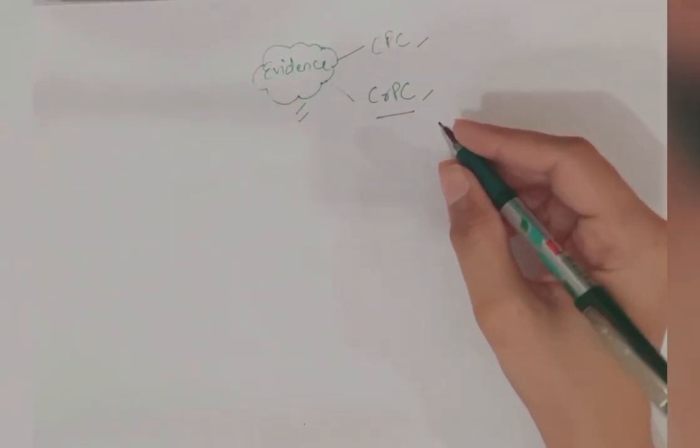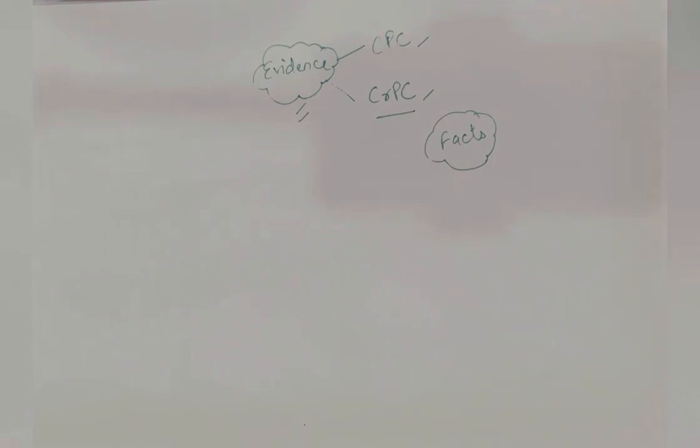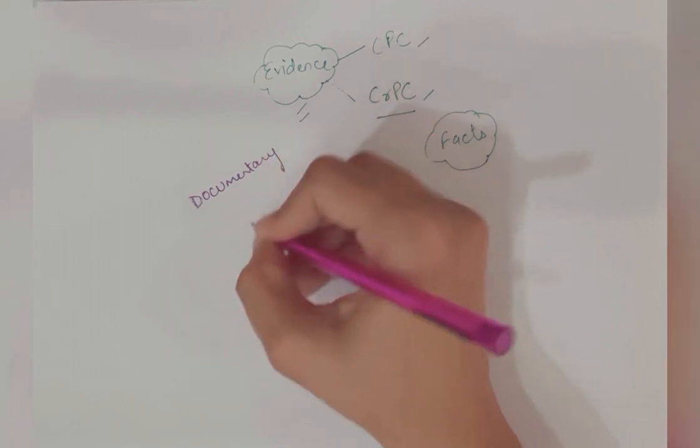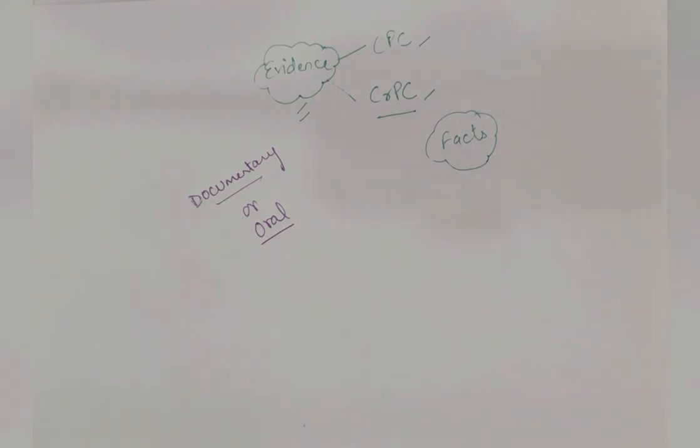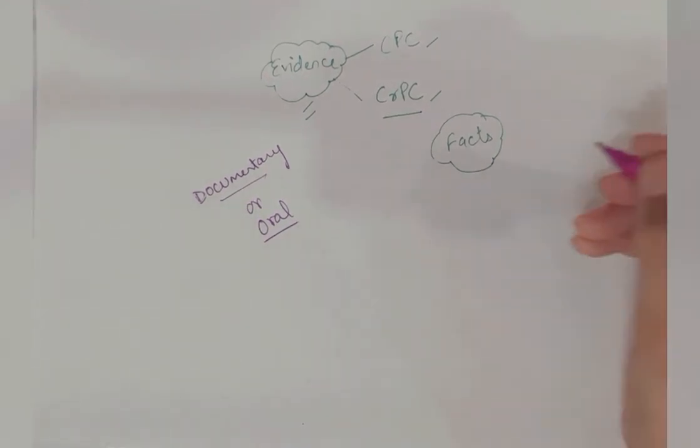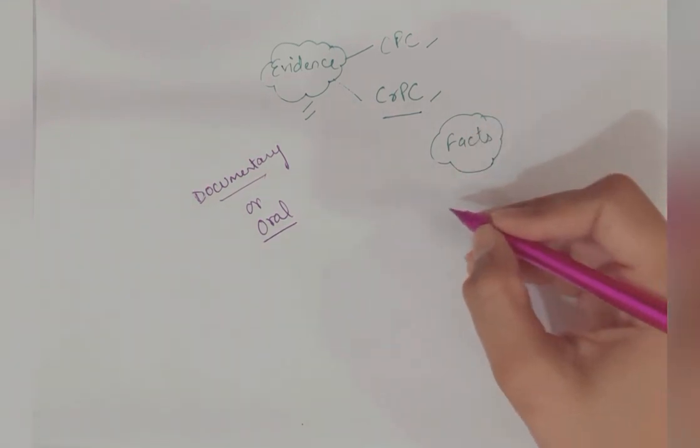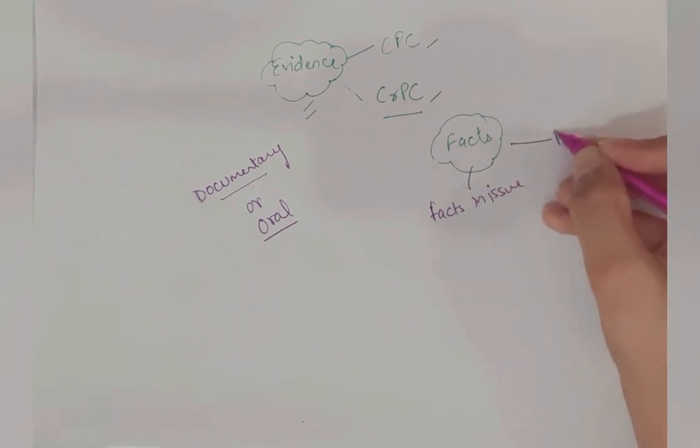What is proved when these judgments happen and this procedure runs? The facts will be proved. Evidence can be given as documentary or oral evidence - you can give written evidence or verbal evidence. There are certain facts that need to be proved, and without proving them the judgment is not valid. Main facts are facts in issue - that is the main fact. Other facts related to the issue are relevant facts. So we have two types: facts in issue and relevant facts.